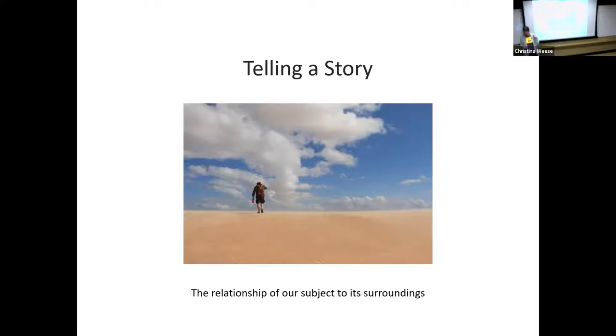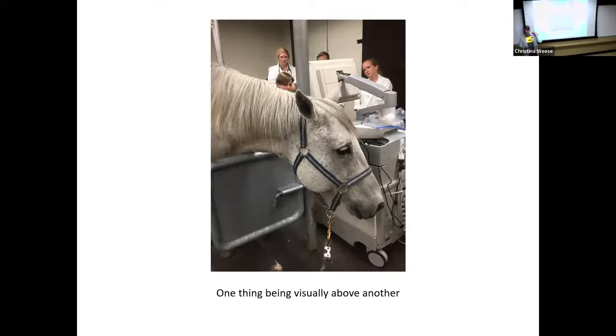Having one thing visually above another is going to also set up your photo to tell a specific story. So in this case, the horse's head is low, he's got a sad expression on his face, and the vets are above him. That basically translates into emotions, right? Horse is down, vets are trying to figure out what's going on. If he had his head up with his ears perked, it would be more of a sports medicine type of photo where he's not necessarily sick, he's just getting checked out, having a health checkup.